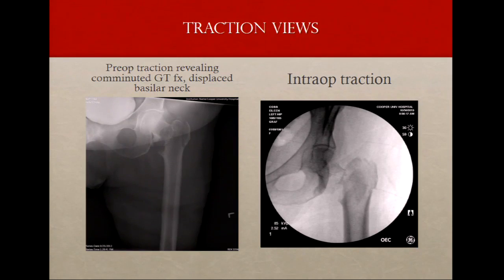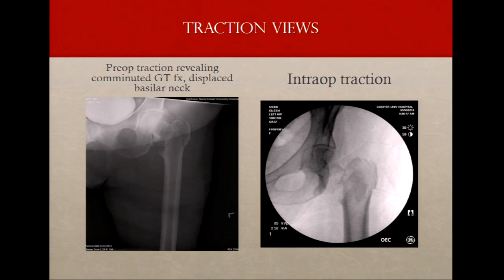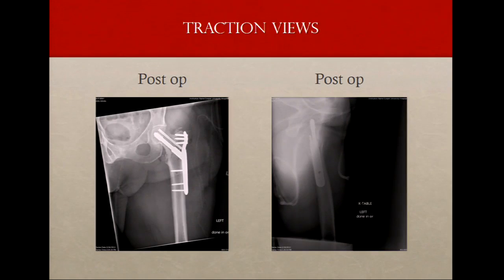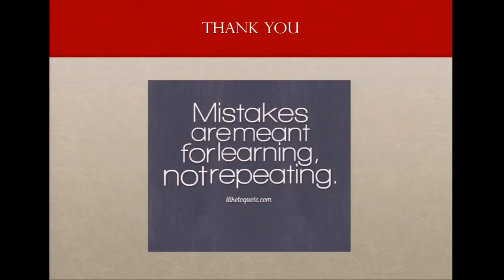Traction views — we get them on a lot of these fractures to determine which way we're going to position the patient. This lady, all I have is her traction views, but it was very difficult to judge what was going on with this fracture. Once you pull it out, you can see what's going on — you've got a bad trochanter, a femoral neck, and you're probably going to have to open this in a young person. That assisted us in our preoperative plan and allows you to make better decisions before you're in the operating room so you're not surprised. Thanks for bearing with all of the mistakes we just showed you.